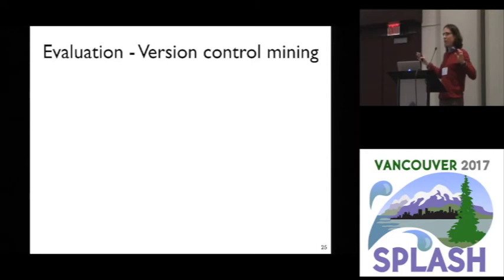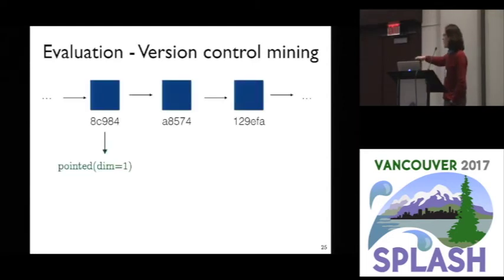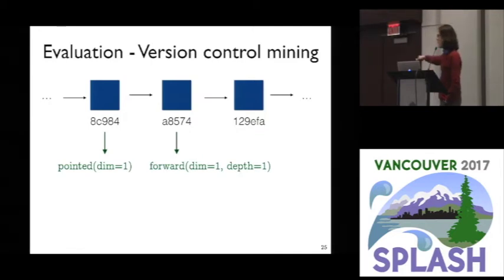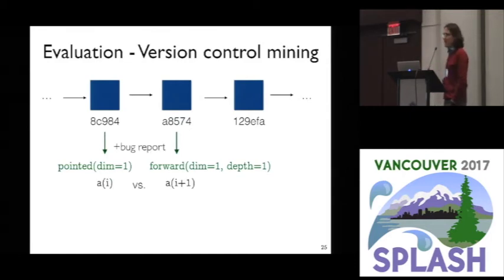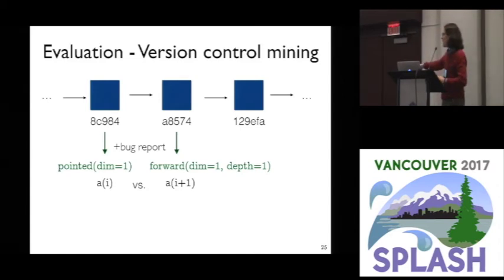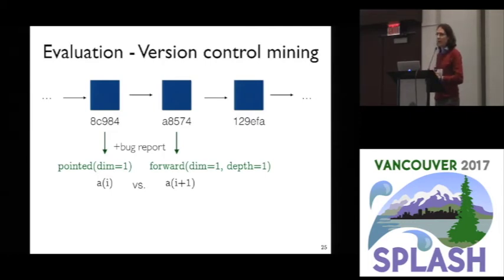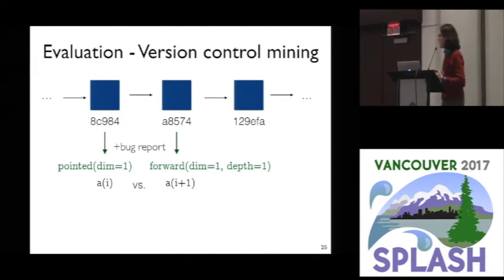We took some version control history of one of our packages, ran inference mode over successive versions, and looked for places where the specifications changed. We then compared that with commit messages, and indeed found things where people said 'this is fixing the bug where we wrote A[i] but actually meant A[i+1].' In that case, our specification language would have been helpful — they could have written the right specification, or it might have prompted them to think about what they really meant.